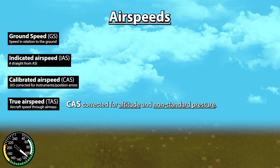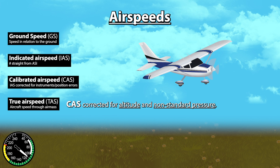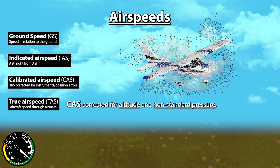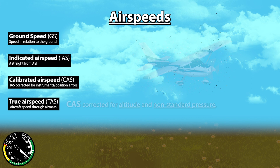Essentially understand true airspeed as the speed of your aircraft in relation to the air mass it's flying through. That number can be higher than the indicated airspeed at altitude because there are fewer air molecules the higher you climb, and your instruments are essentially becoming less accurate at monitoring your airspeed through the air mass.